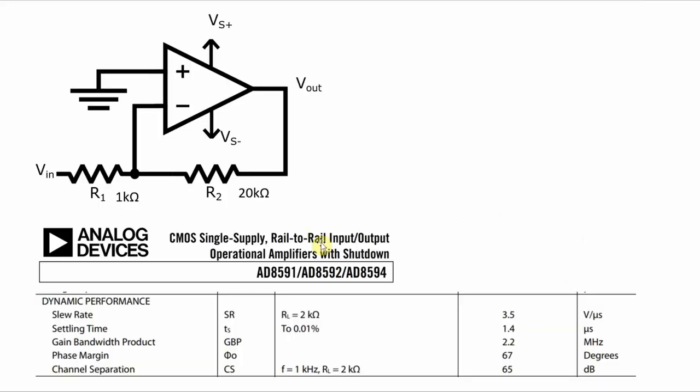And if I go into the data sheet, I'll find the part of the characteristics on dynamic performance. And you can see here, gain bandwidth product is 2.2 megahertz. And that means that the bandwidth I will get when I have a gain of 10 is 110 kilohertz, which meets my requirements of having it at least 100 kilohertz.